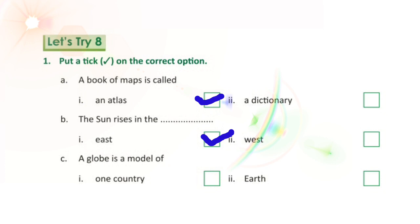Next: a globe is a model of — first, one country, or second, earth. The answer is earth.